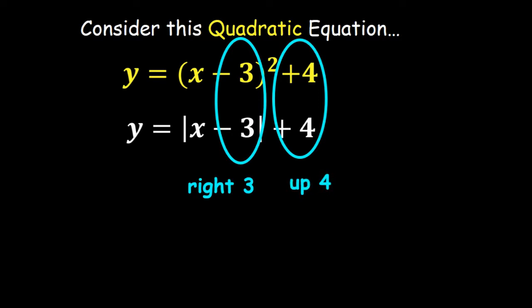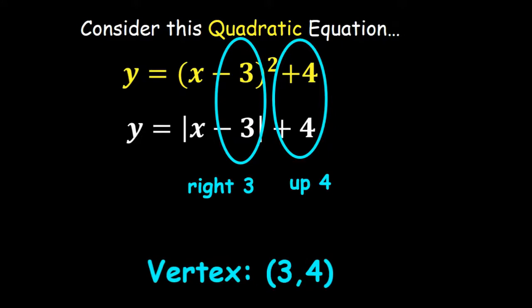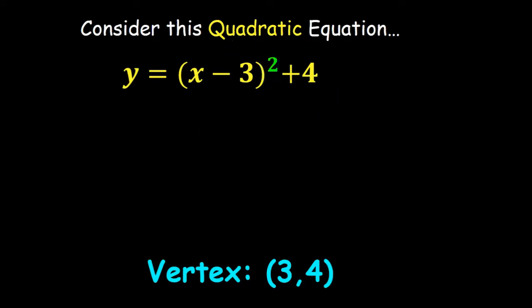It looks like we can find the vertex of this quadratic equation right away — the vertex would be at (3, 4). Now just the other day we were talking about finding the vertex when it was in standard form. So can we take this equation and make it standard? Move over to the next column of your little slip of paper.